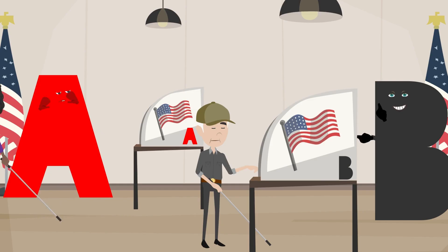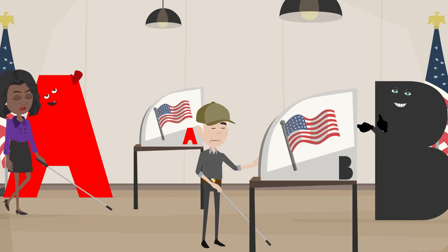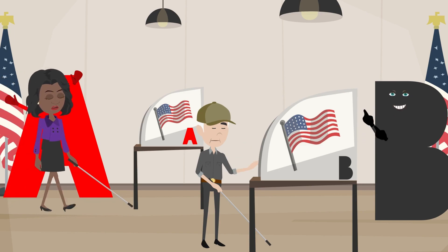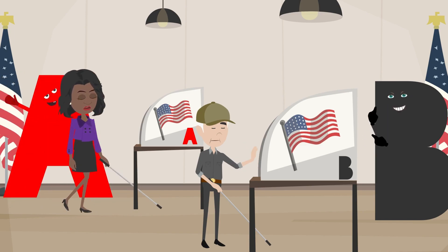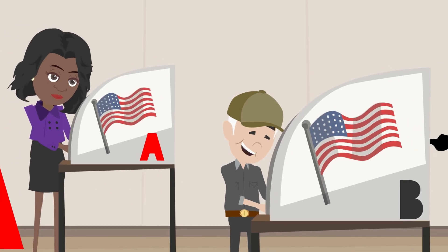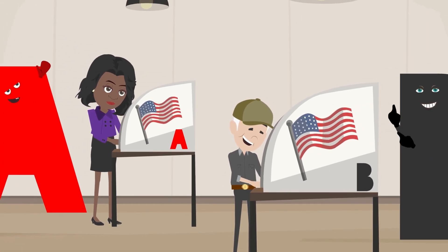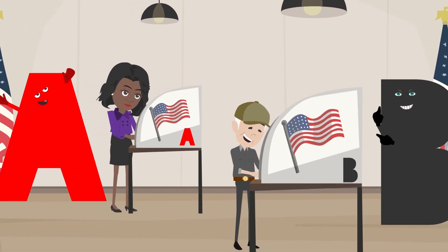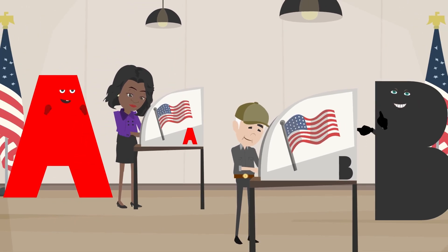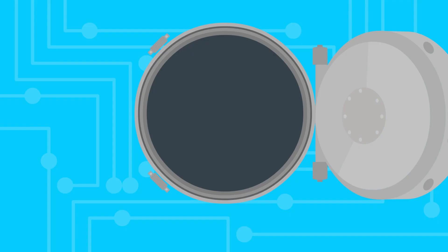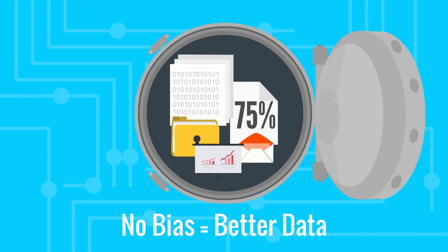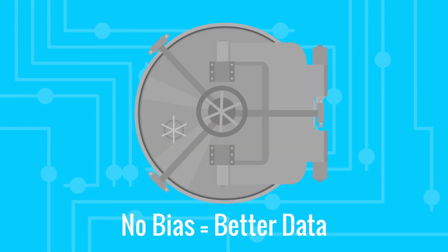Another benefit of A/B testing is that these visitors don't know that they're in the test. They don't know they're being tested, so the result is their unbiased behavior. They vote with their behavior — if they don't like the experience, then that experience doesn't win. This absence of bias gives you really good data.